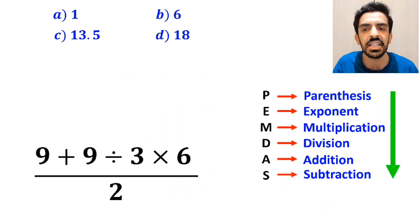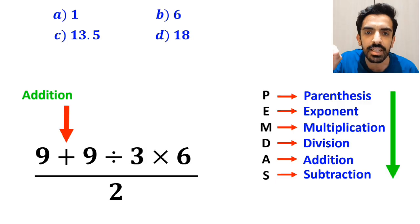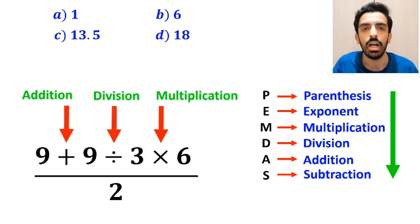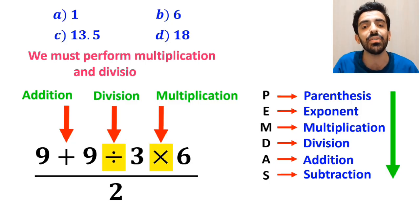As you can see in the image, in the numerator of this fraction we have an addition sign, then a division sign, and finally a multiplication. According to the PEMDAS rule, we must perform multiplication and division first.